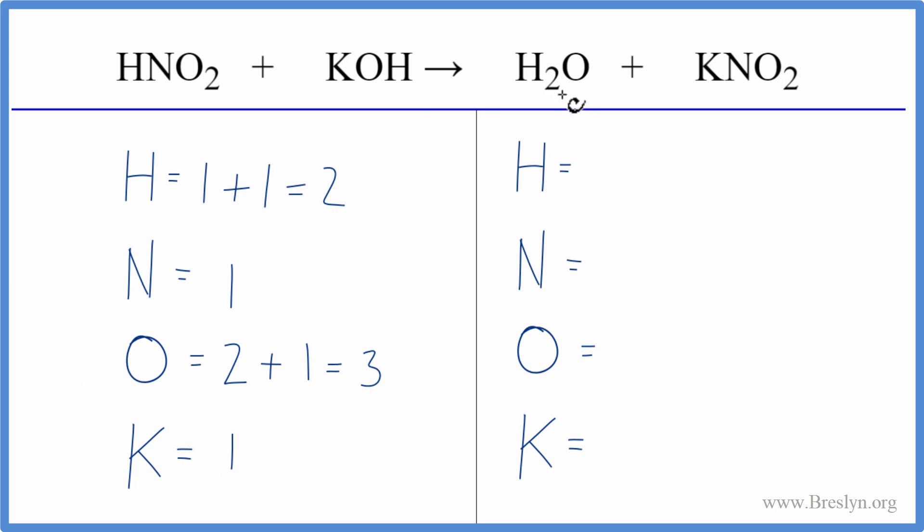On the product side, we have two hydrogens. We have one of the nitrogens. One oxygen plus we have two oxygens here. So again, we have three oxygen atoms and just one potassium.